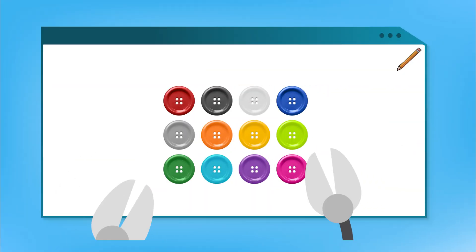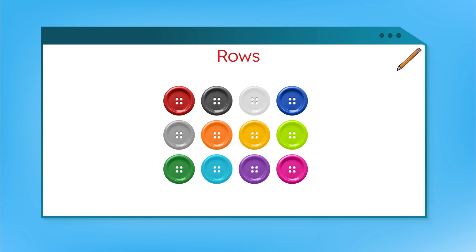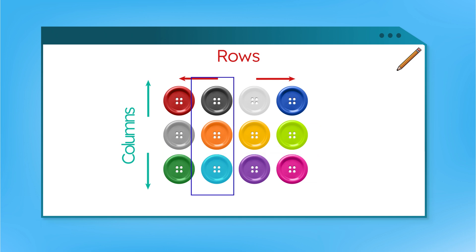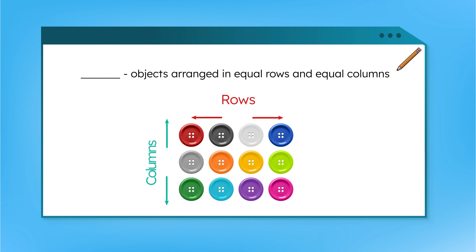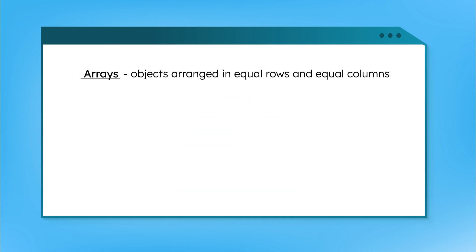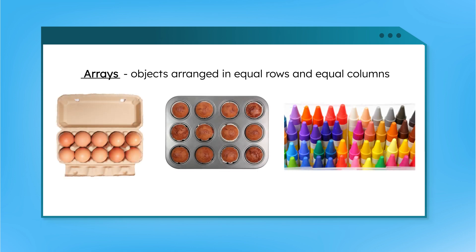Whoa, that looks way more organized! Mia lined up the buttons in rows that go from side to side, and columns that go up and down. Each row is the same size and length, and so is each column, so there's an equal number of buttons in each row and in each column. When objects are arranged in equal rows and equal columns like this, it's called an array. You've probably seen arrays before — they're all around us. Eggs in a carton, muffins in a tin, and crayons in their box are all organized in arrays.